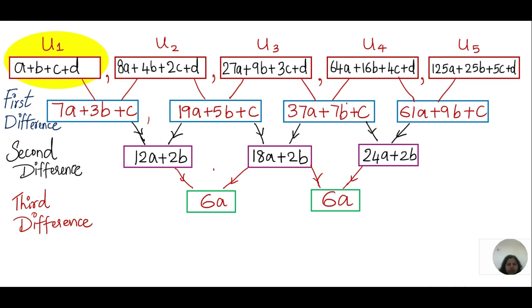It is based on this proof that I used the four expressions for: the first term (a plus b plus c plus d), the first term of the first difference (7a plus 3b plus c), the first term of the second difference (12a plus 2b), and the third difference (6a) — equating these to the actual values from the sequence to find a, b, c, and d. I hope that clarifies the approach. Thank you for watching.